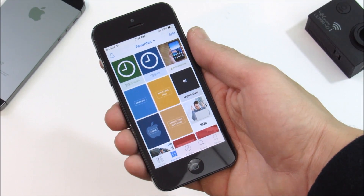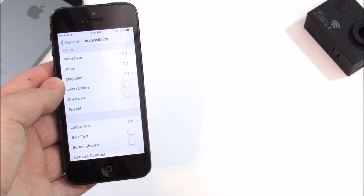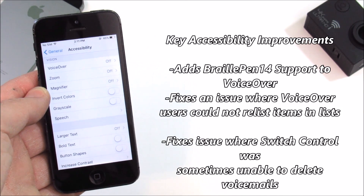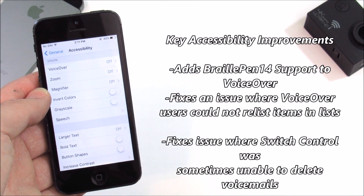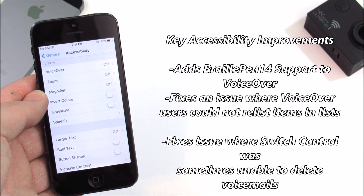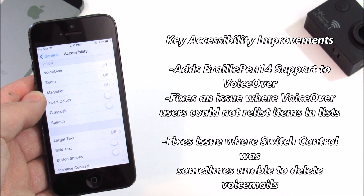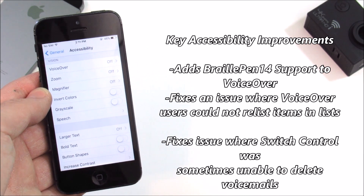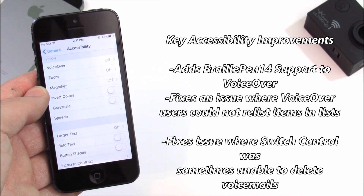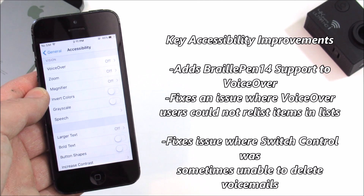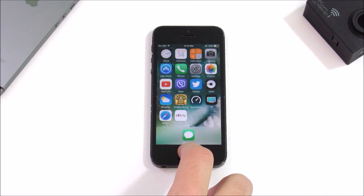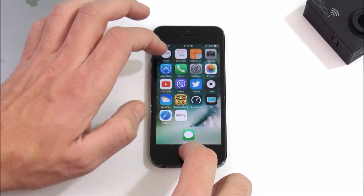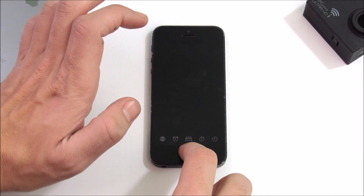There were also key accessibility improvements, including Braille 14 support, VoiceOver fixes, an issue where VoiceOver users cannot relist items in lists, and a fix for an issue where Switch Control was sometimes unable to delete voicemails. Now let's take a quick look at performance on the iPhone 5 running iOS 10.2.